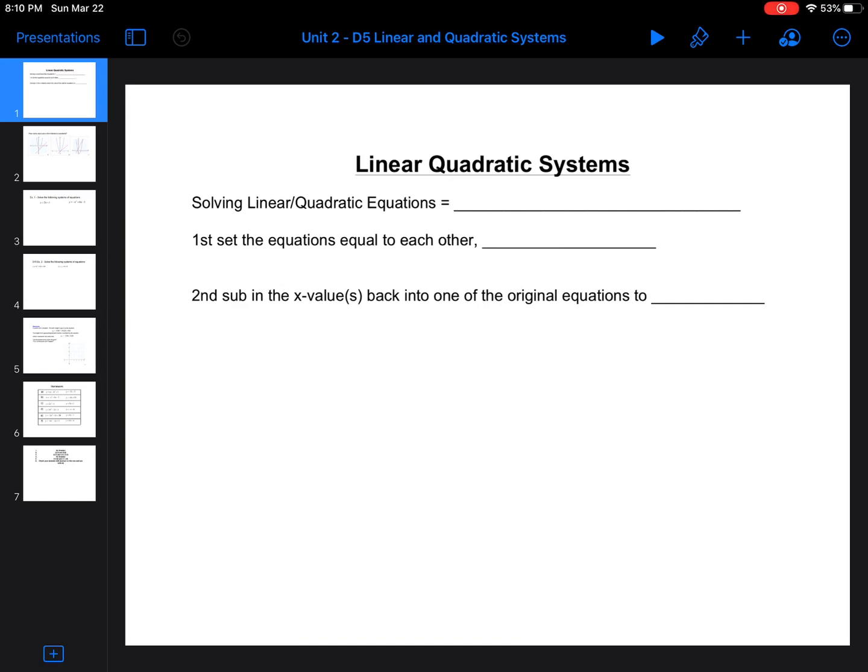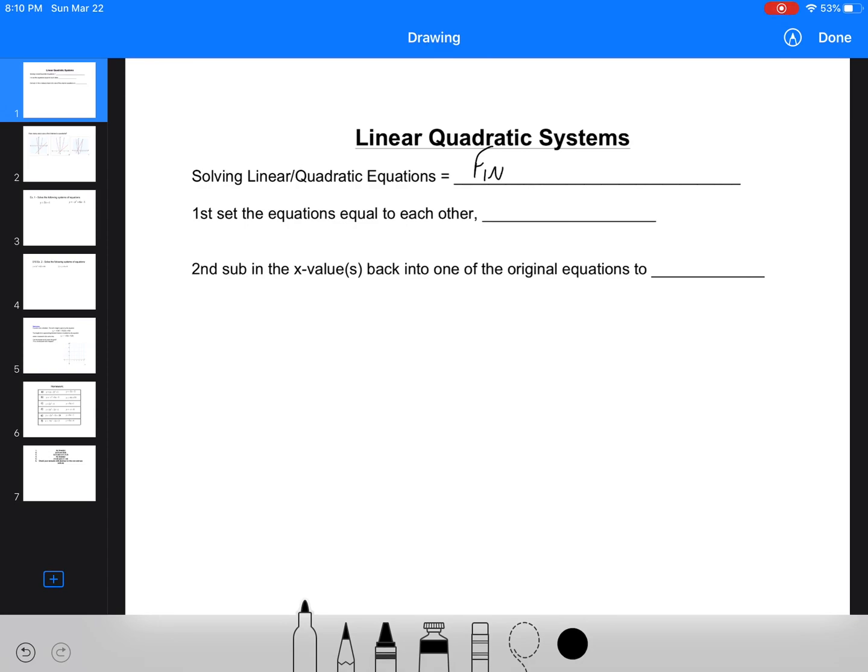Alright, so linear quadratic systems. We're solving systems, so solving a linear quadratic equation is just finding the point of intersection. To solve linear quadratic equations equals finding point of intersection, same as solving a linear system. The first thing you want to do is set the equations equal to each other and solve for x.